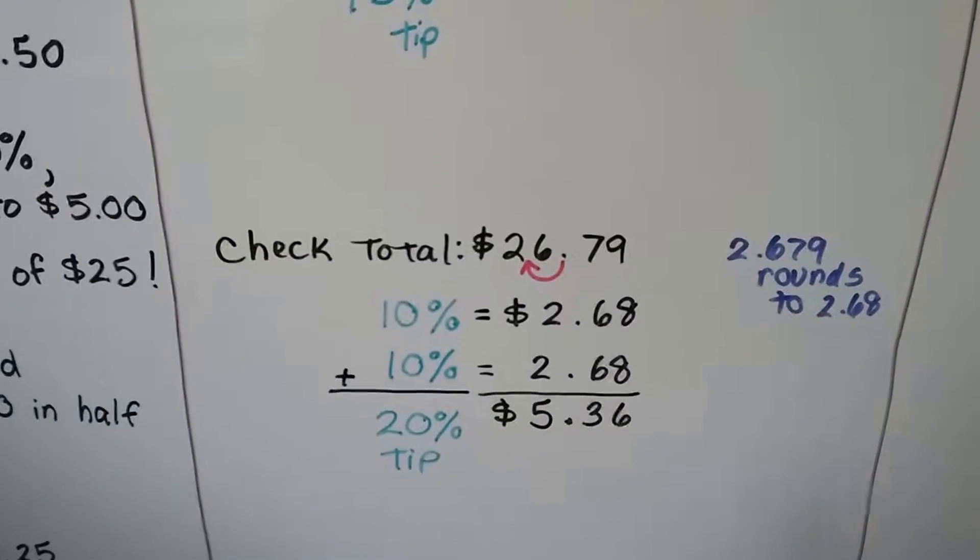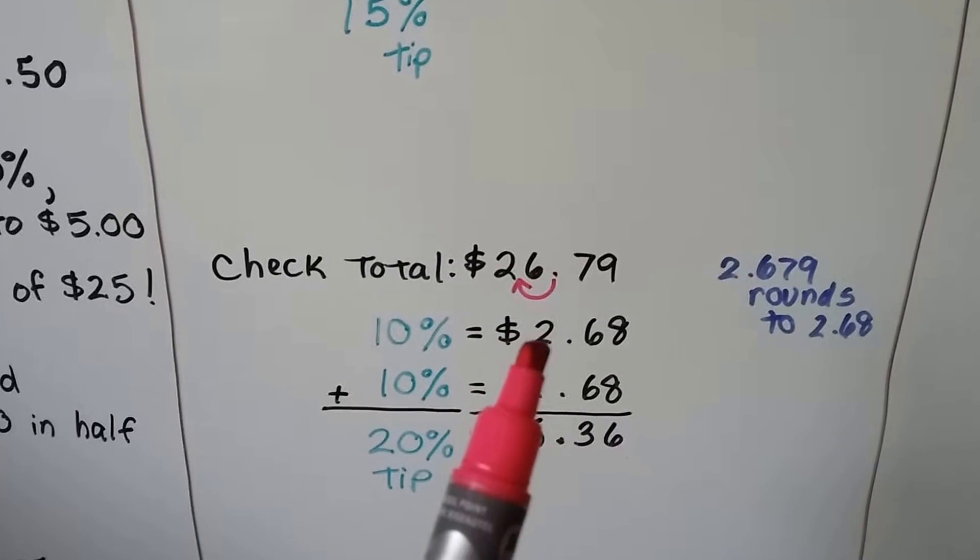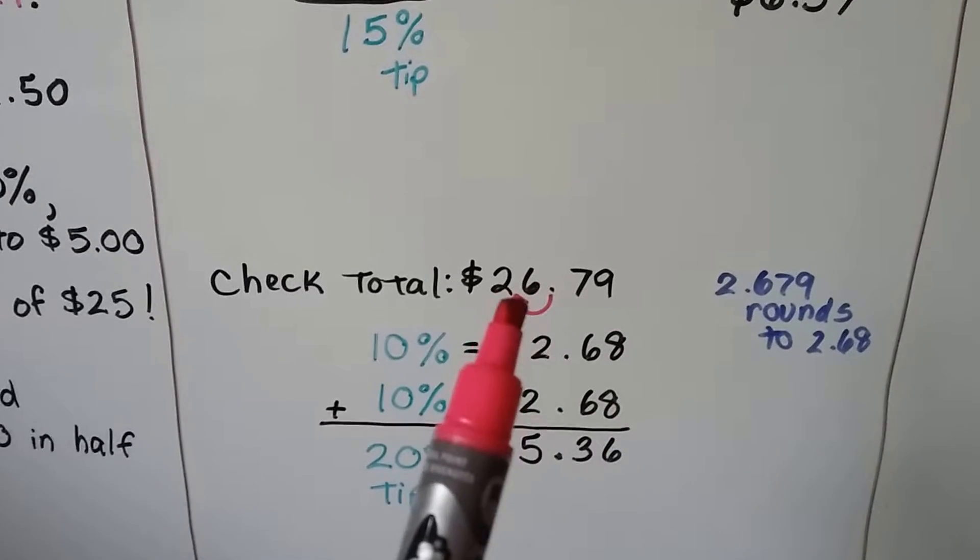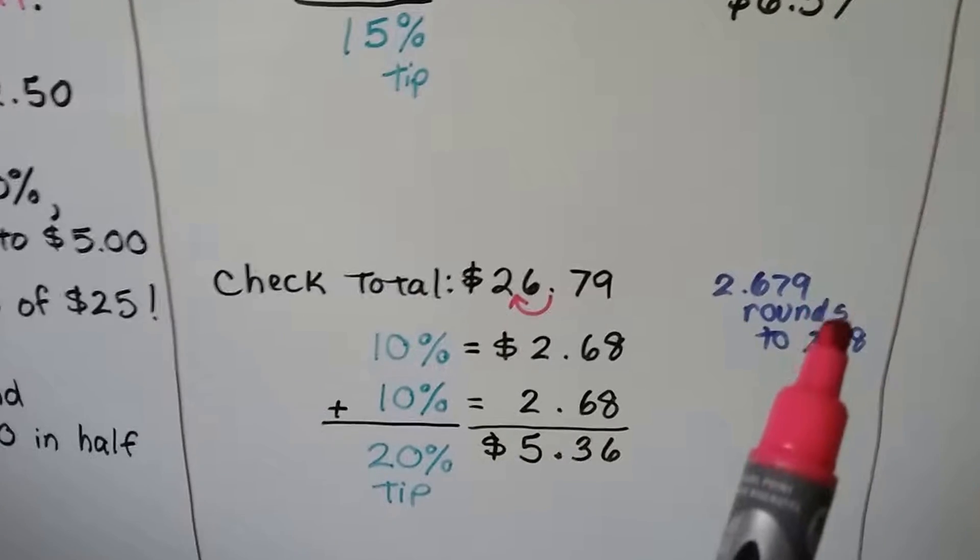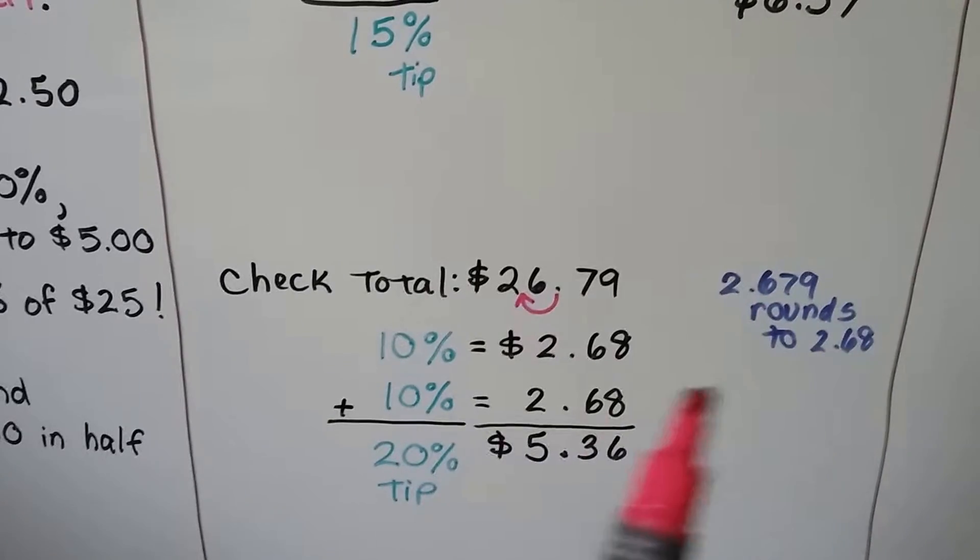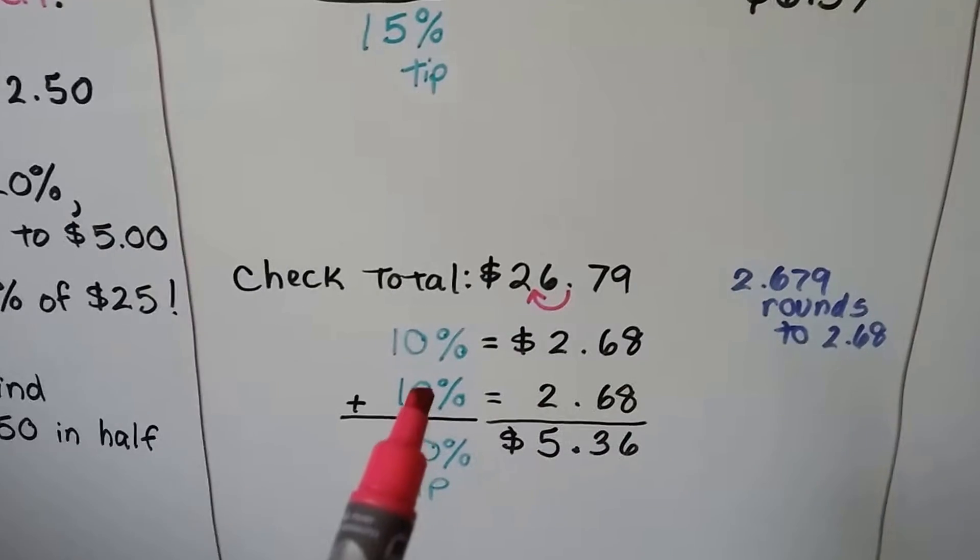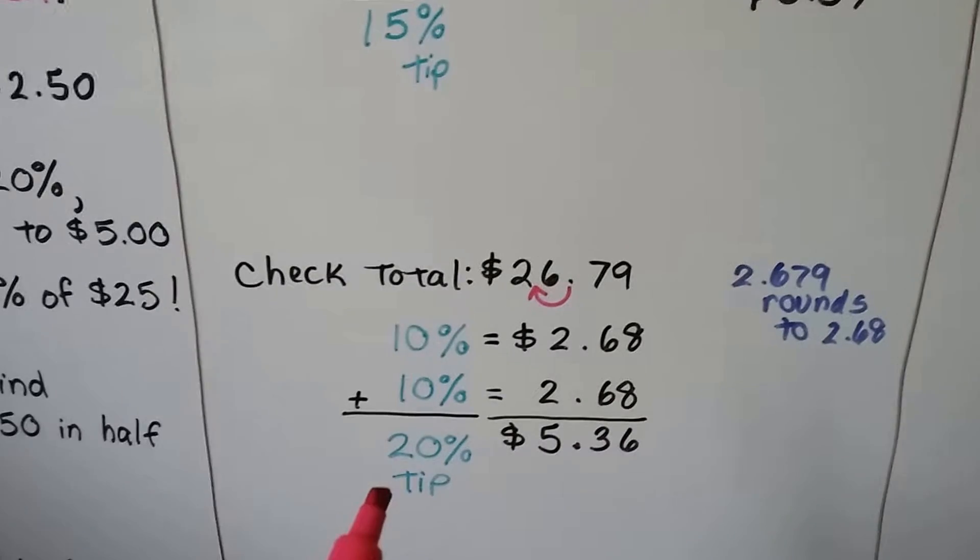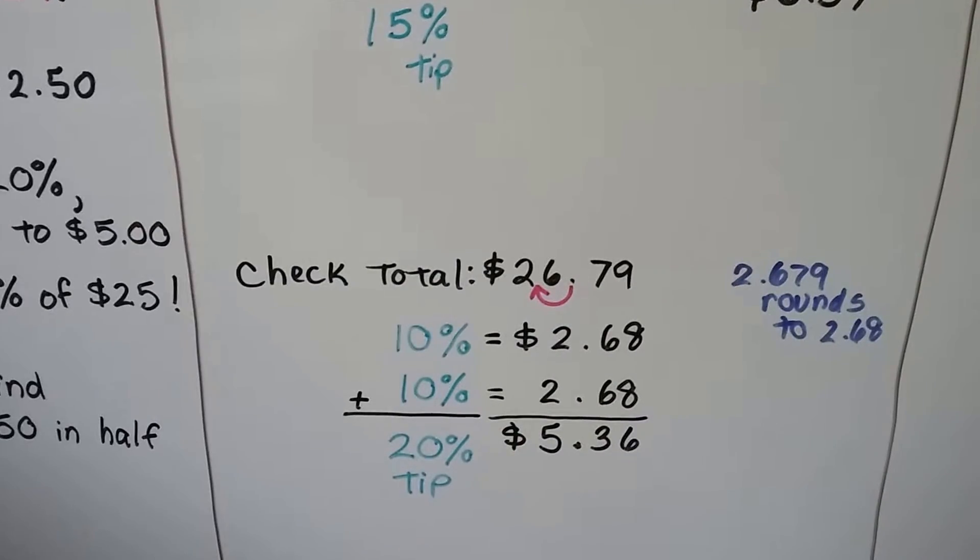If the check total was $26.79, ten percent we would round to $2.68, because if we move this decimal point over, we're going to have 2.679, and that nine is going to round the seven to an eight. So we'll just do $2.68. Another ten percent would be another $2.68. So if we want to leave a twenty percent tip, it would be $5.36.